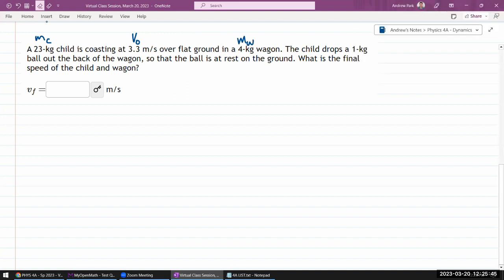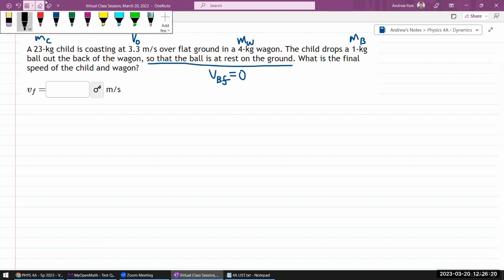The child drops a 1 kilogram ball, the mass of the ball, out the back of the wagon. Oh that's interesting, so that the ball is at rest on the ground. So I have a velocity of the ball final that's going to be zero with respect to ground. What is the final speed of the child and the wagon? So let me draw the picture to make sure I understood it correctly.